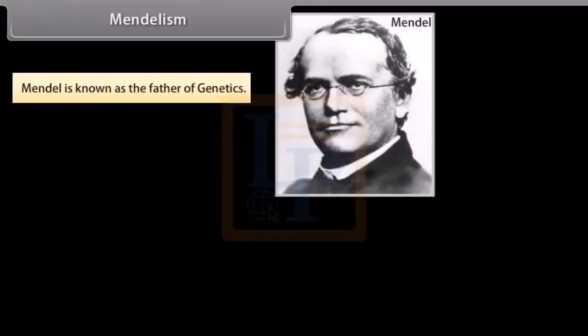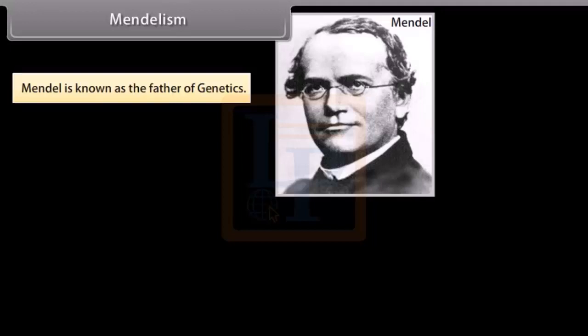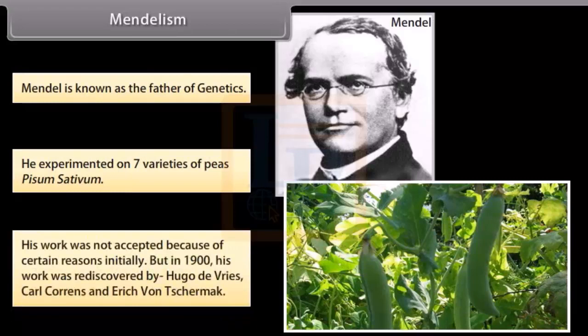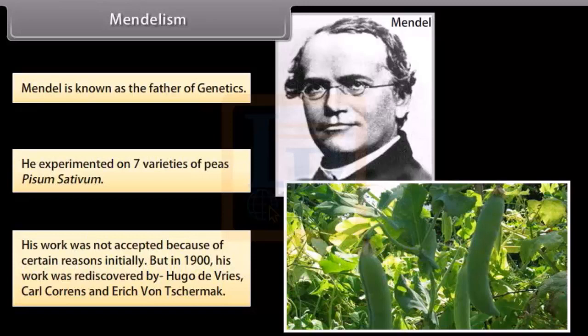Mendelism. Mendel is known as the father of genetics. He experimented on seven varieties of peas, Pisum sativum. His work was not accepted because of certain reasons initially, but in 1900 his work was rediscovered by Hugo de Vries, Carl Correns, and Eric von Tschermak.